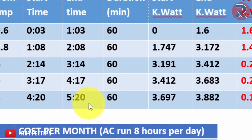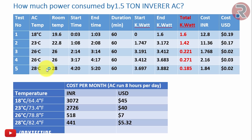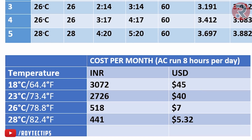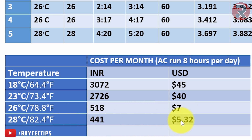At 28 degrees centigrade with energy saving mode: only 185 watts consumed in an hour. If you run your AC at 26-28 degrees rather than 18 degrees, you save near about 70 percent on your electricity bill. Here's a monthly cost chart for 8 hours of use per day: 18 degrees costs 3,070 rupees (~45 USD), 23 degrees costs 2,726 rupees (~40 USD), 26 degrees costs only 518 rupees (~7 USD), and 28 degrees costs 441 rupees (~5.32 USD) per month.